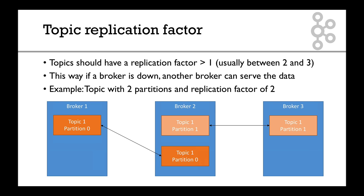Now let's talk about topic replication factor. Topics should usually have a replication factor greater than one — typically between two and three. This way, if a broker crashes, another broker can still serve the data. In this example, we have one topic with two partitions and a replication factor of two. Partition zero is on broker one and two, and partition one is on broker two and three — so each partition has two replicas across the whole cluster.